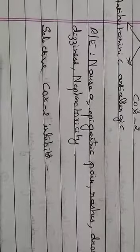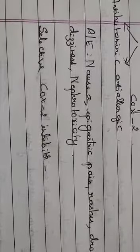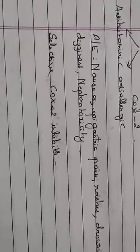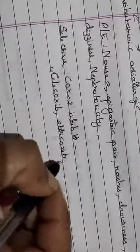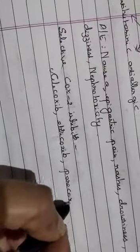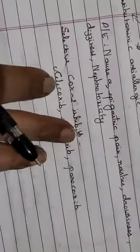Selective COX-2 inhibitors only inhibit the COX-2 enzyme — they do not act on the COX-1 enzyme. This prevents the major side effect of gastric irritation, so in people who cannot tolerate non-selective NSAIDs, this class can be used. Examples include celecoxib, etoricoxib, and parecoxib.